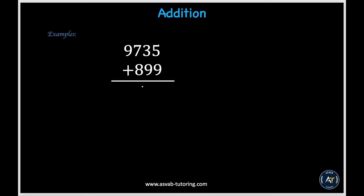Going on to the next problem, we are being told to add up 9,735 to 899. We'll follow the same rules and start in the ones place and add up all the columns. So in the ones place, we have 5 plus 9, which is equal to 14. And because 14 is a double digit number, we have to carry over the 1 from 14 to the tens place. So in the tens place, we'll be adding up 1 plus 3 plus 9, which gives us 13.